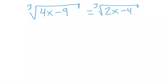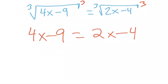Okay, so to get rid of these cube roots, we're going to raise it to the third on both sides, and then we get 4x minus 9 equals 2x minus 4.